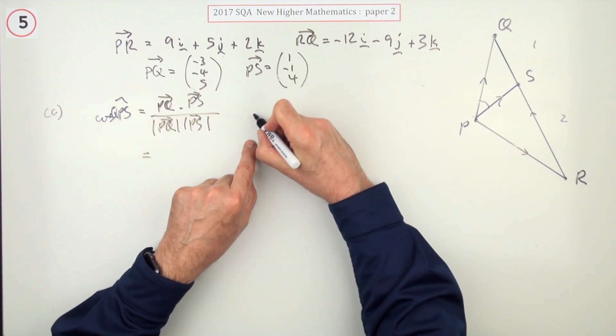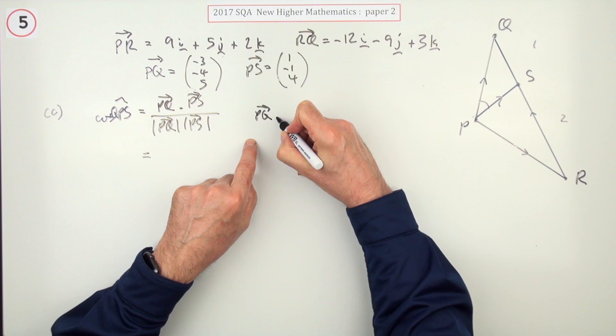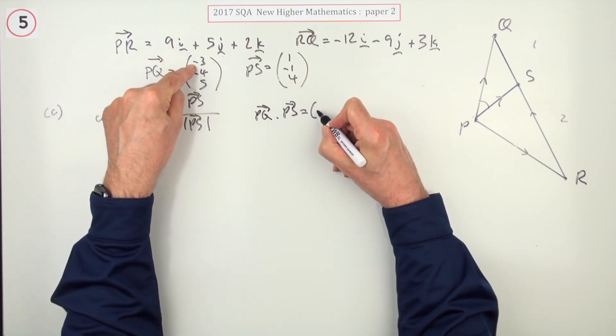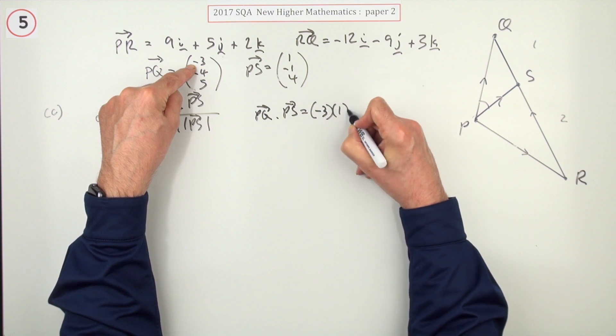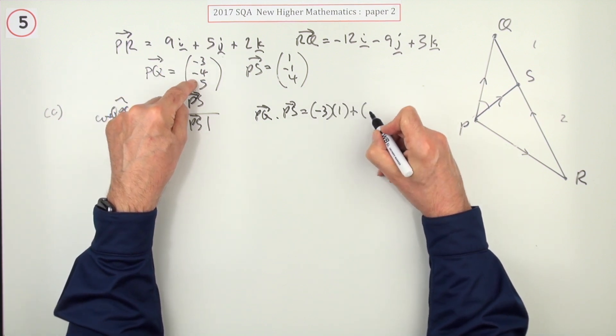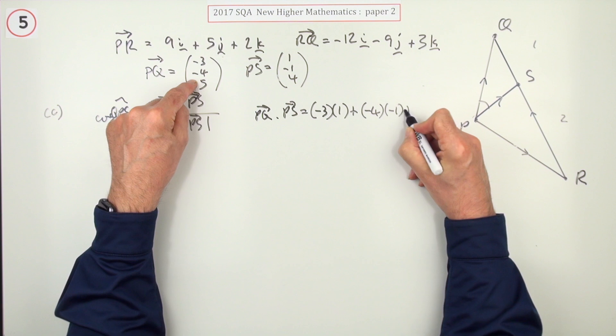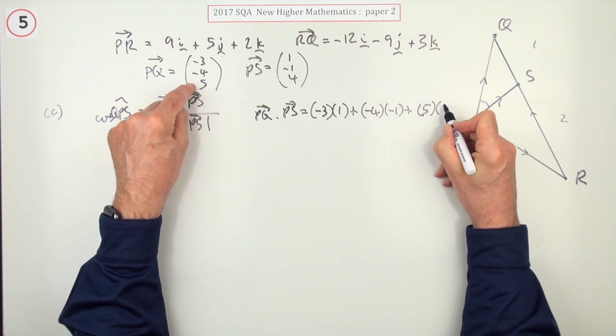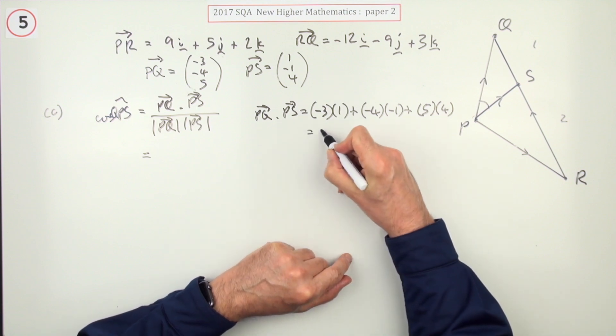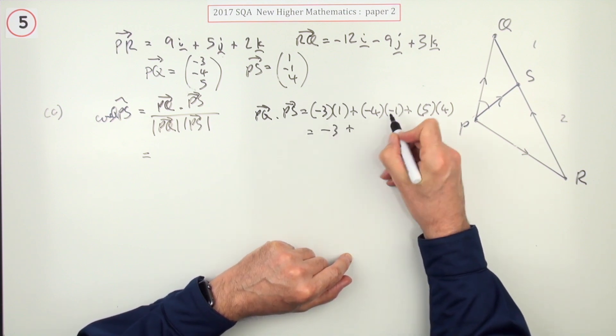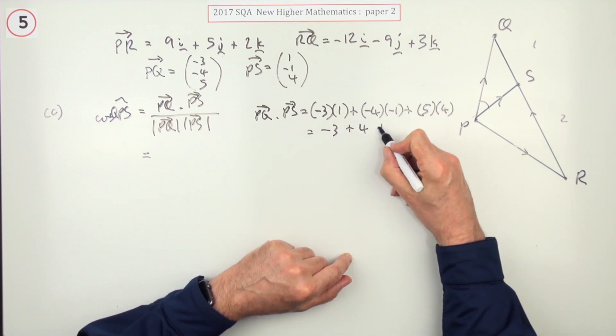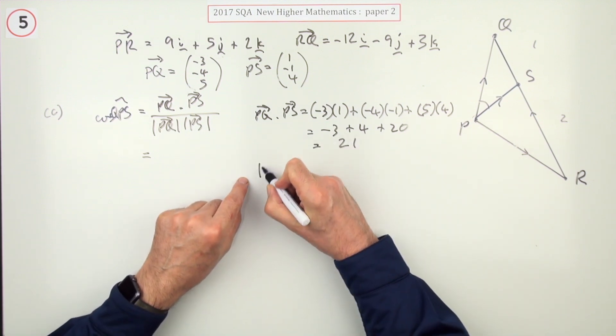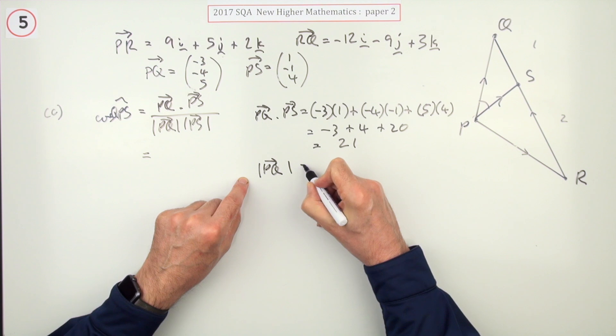PQ dot PS, I'll just write them down. Multiplying the x components, negative one times three, and adding on, multiplying the y components and adding on, because it's a scalar of the result, not a vector, multiplying the z components. That's negative three, but that's a plus four, and that's a plus 20, so that comes to 21.